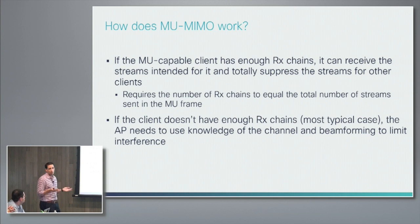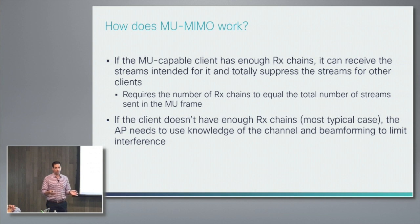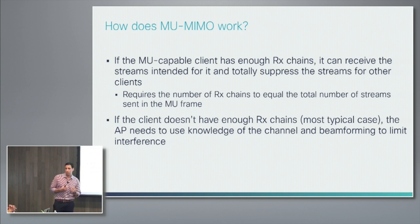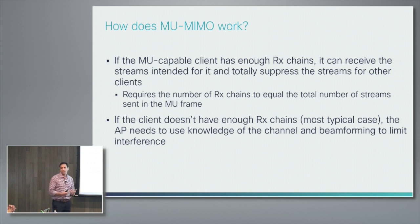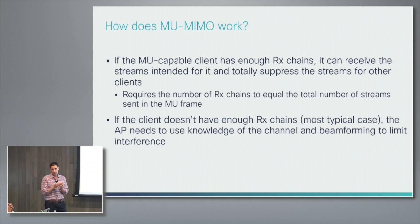You could have three-by-three clients and send a three spatial stream packet. The three-by-three client receives the full packet, suppresses the two spatial streams not intended for it, and receives the one intended stream fine. But in most situations that won't be the use case — clients won't have enough receive chains to handle all three spatial streams. So there has to be action on the part of the AP to null and beamform properly, so clients don't receive spatial streams not intended for them. The AP needs to null the interference for the client.